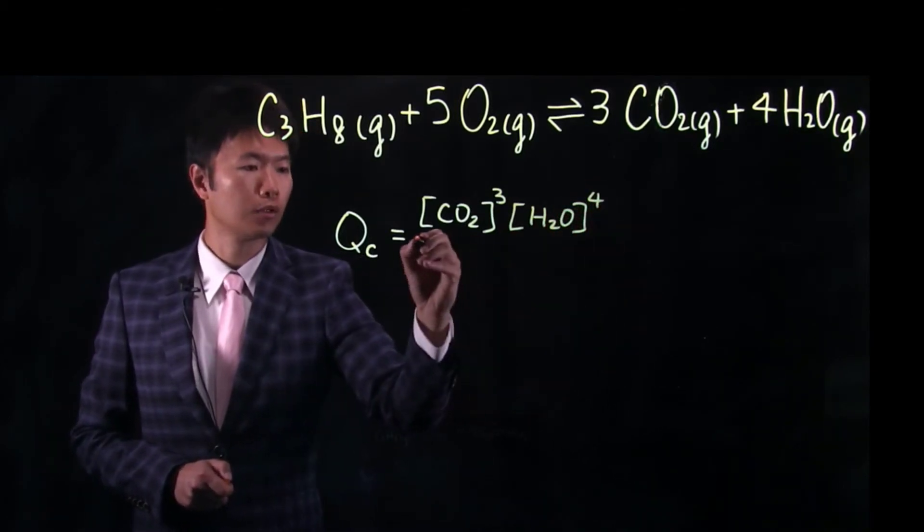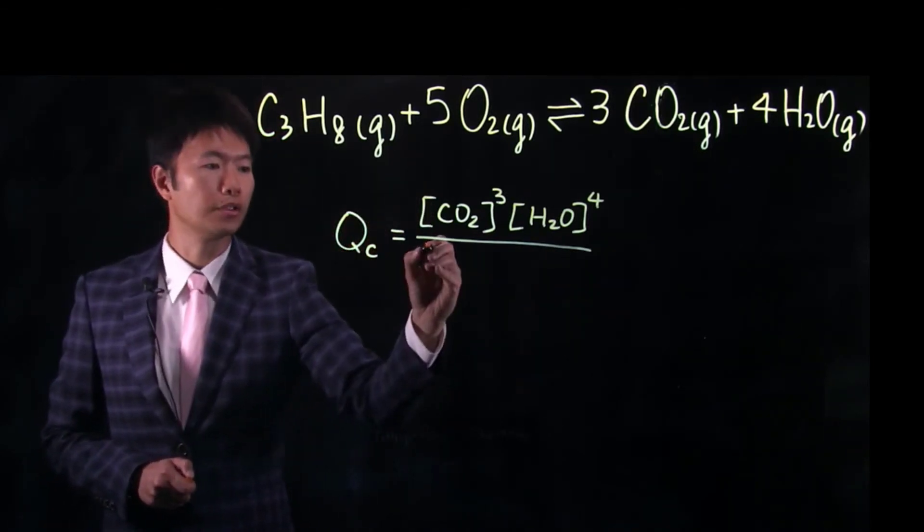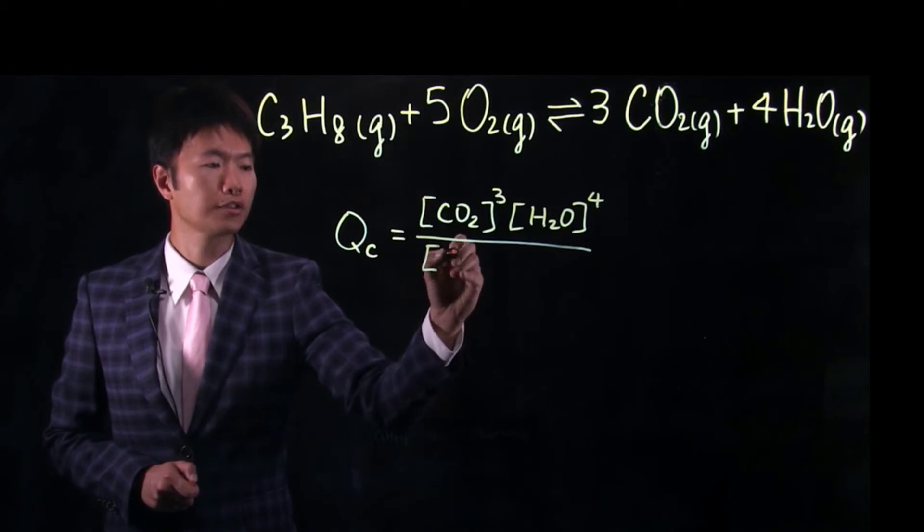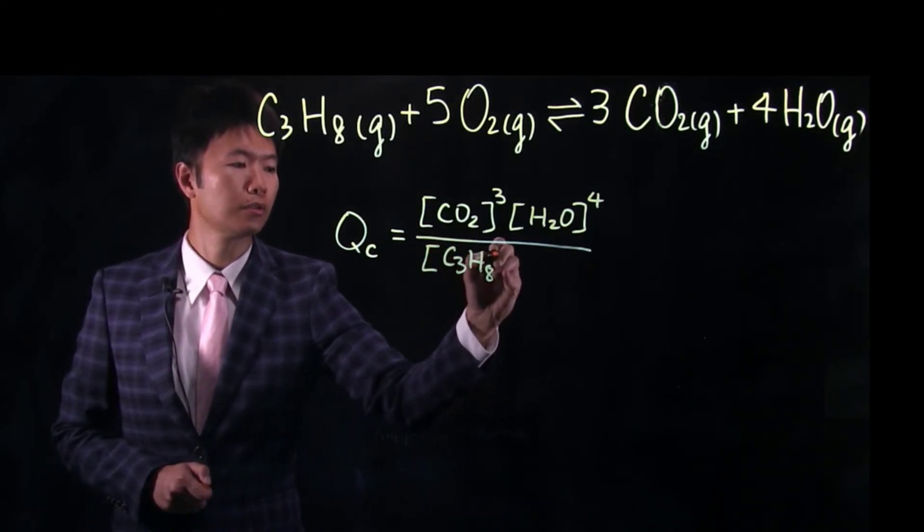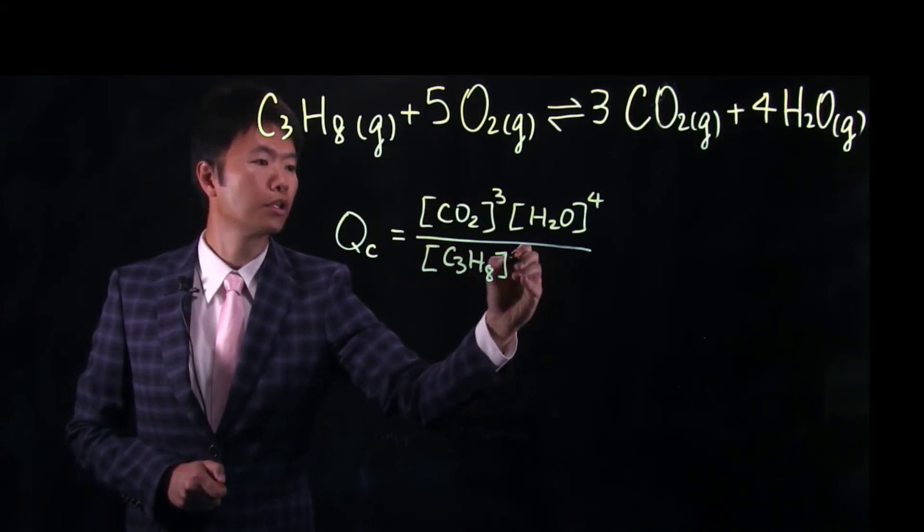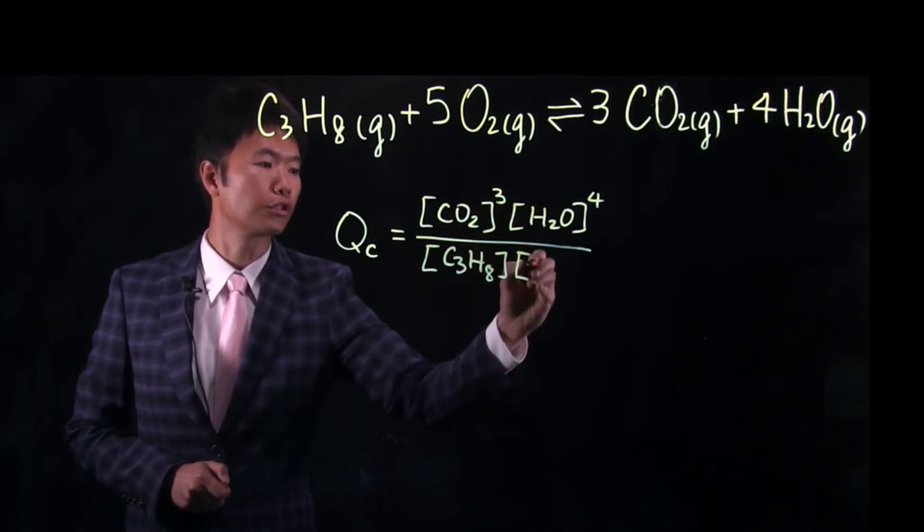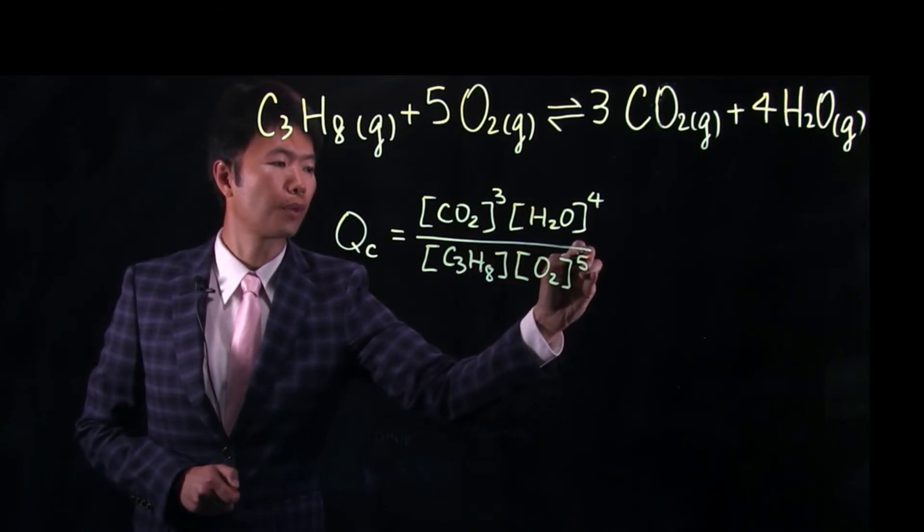divided by the concentration of the reactant. In this case the propane gas, C3H8. And then this is only the first power, times the concentration of O2, raised to the fifth power.